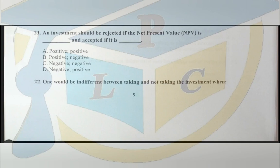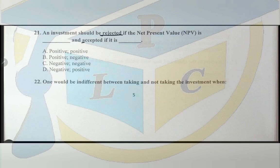Without wasting time, let's move straight to our question for today. Question 21: an investment should be rejected if the net present value is dash, and accepted if it is dash. NPV is one of the key methods for appraising investment when it comes to capital strategy decisions.